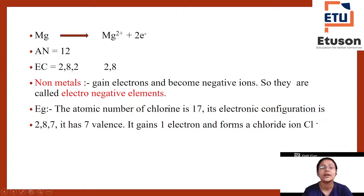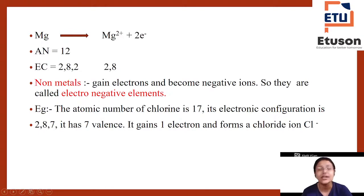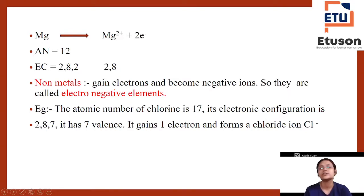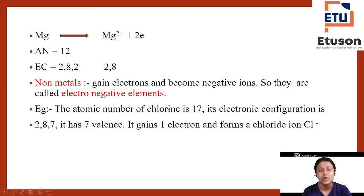At the same time, what about non-metals? Non-metals gain electrons and become electronegative elements. They become negatively charged, forming negative ions called anions.